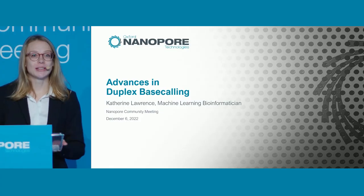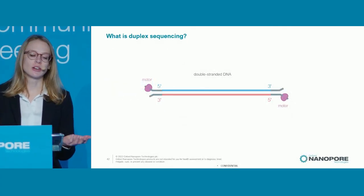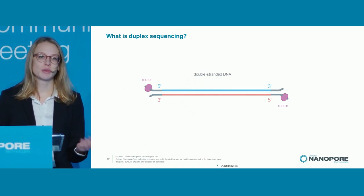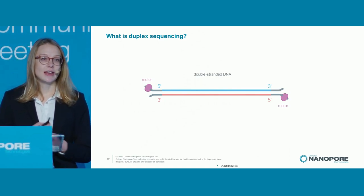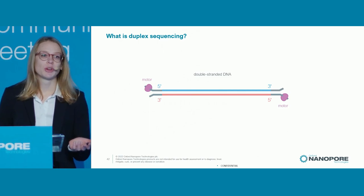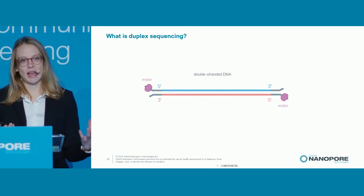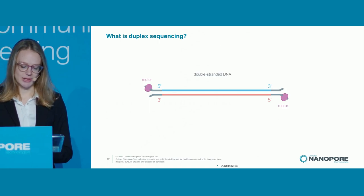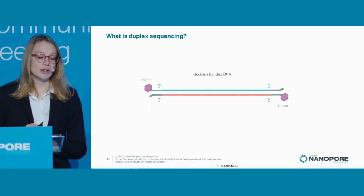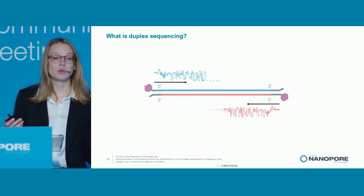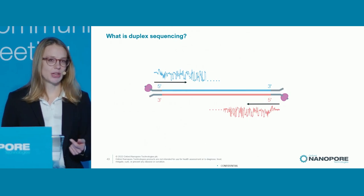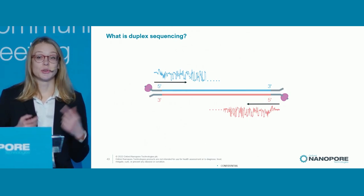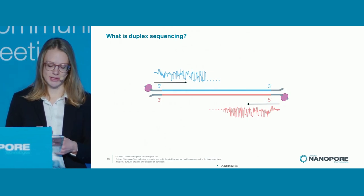So first of all, what is duplex sequencing? Duplex here is referring to double-stranded DNA. This cartoon shows a piece of double-stranded DNA, and in our sample preparation, both ends of the DNA have an adapter ligated with a motor on the five prime end. In duplex sequencing, we obtain a sequencing signal from both simplex strands of the same individual DNA molecule — so two reads from the same molecule.